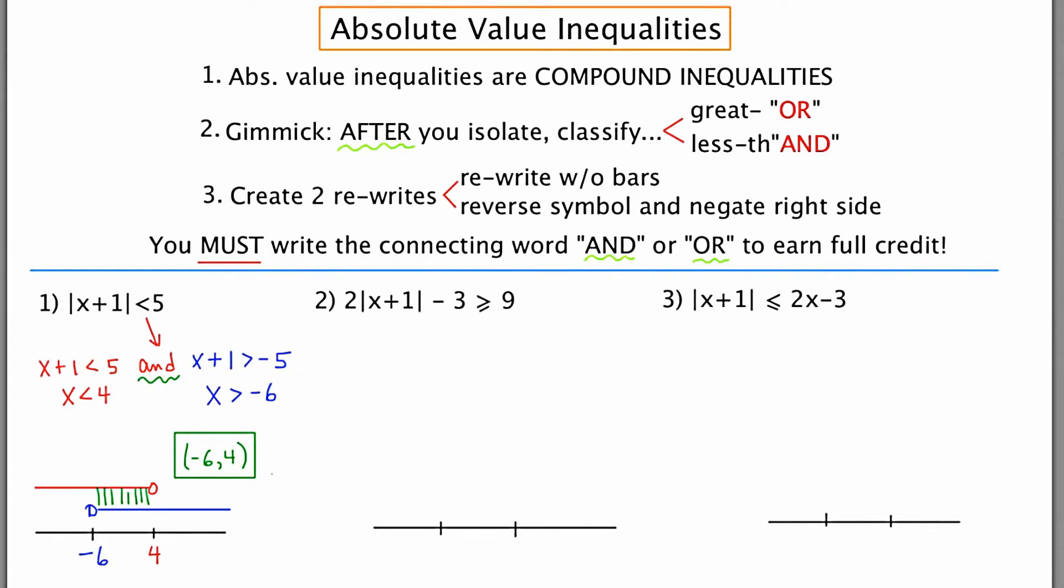Looking at example two, we have to do a little bit more work. We have to start by isolating the absolute value expression. I'll start by adding three to both sides. Next I'll divide by two. You'll notice the greater than or equal to symbol but I say to myself greater. So I'm going to write the word or in between. My first rewrite will be x plus one is greater than or equal to six. Solving that I get x is greater than or equal to five. Writing the second inequality we get x plus one is less than or equal to negative six. And solving that we get x is less than or equal to negative seven.